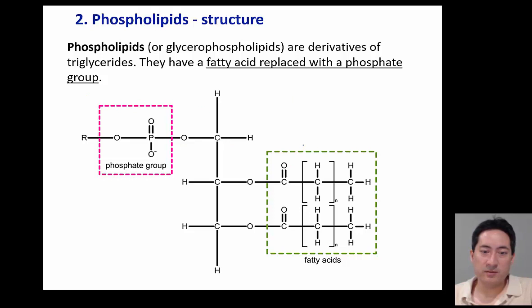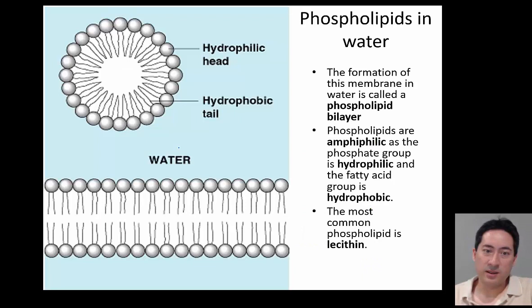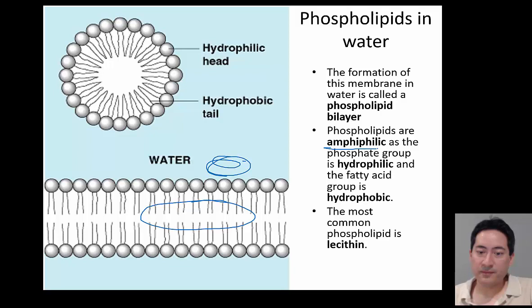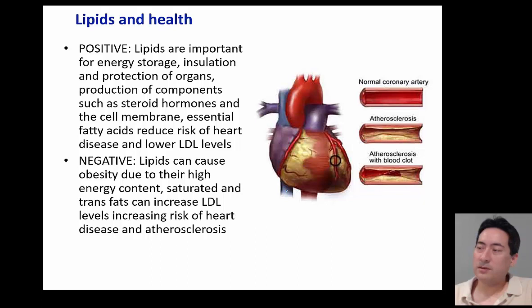The second major group are the phospholipids, which is basically what we've been talking about, but you get rid of a carboxylic acid and add a phosphate group, which is hydrophilic, which is quite significant. If you look at the uses of that, that is the cell membrane. That can be soluble in water and react with the water and then have this protective inside area that's hydrophobic. That's called amphiphilic.